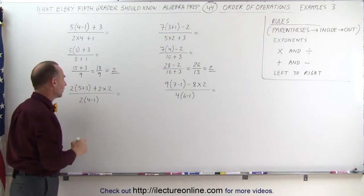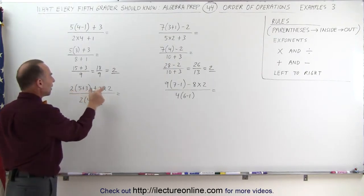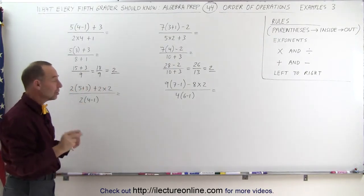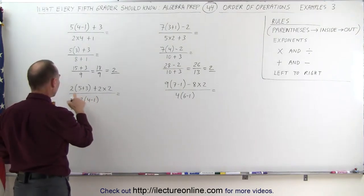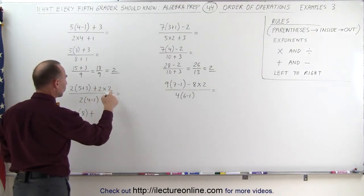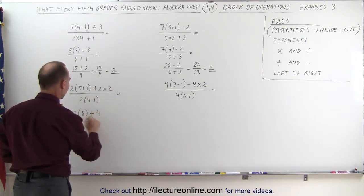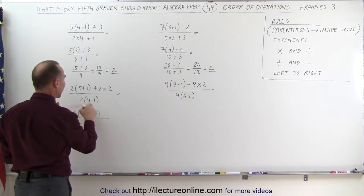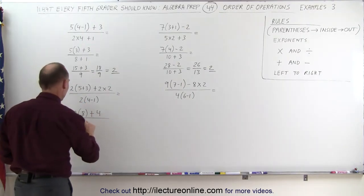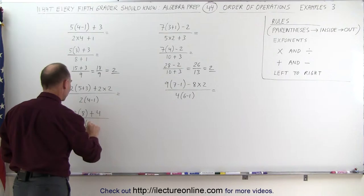Let's go on to this one here. Notice we have parentheses, we have a multiplication there, we can do this as follows. This is equal to, first we add what's in the parentheses, 2 times 5 plus 3, which is 8, plus 2 times 2, which is 4, divided by 2 times, well we have to do what's in the parentheses first, so this would be 2 times 4 minus 1, which is 3.